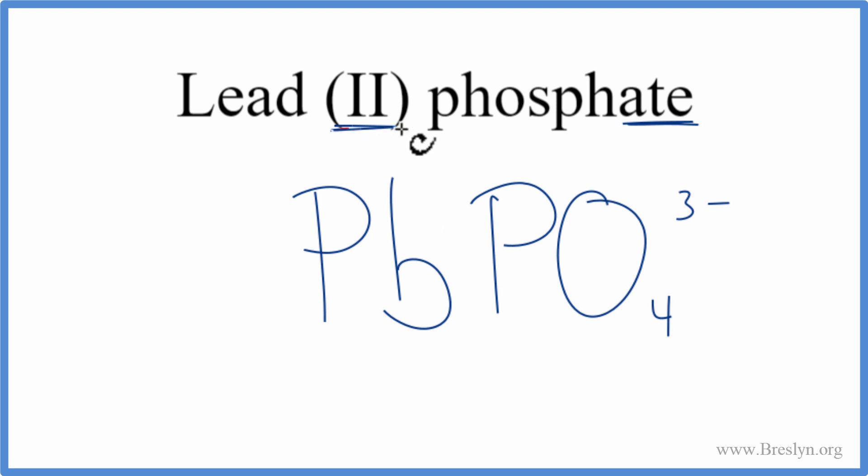Lead(II)—that Roman numeral II tells us the charge on the lead. That's 2+. We know the phosphate is 3-. These should add up to zero, and right now they don't.